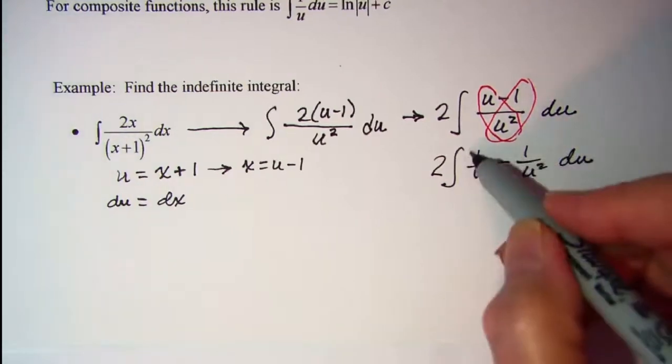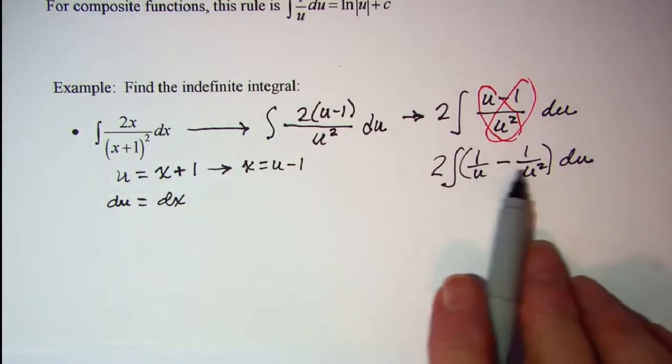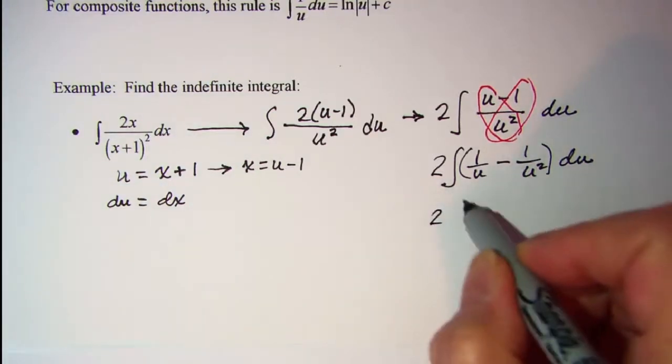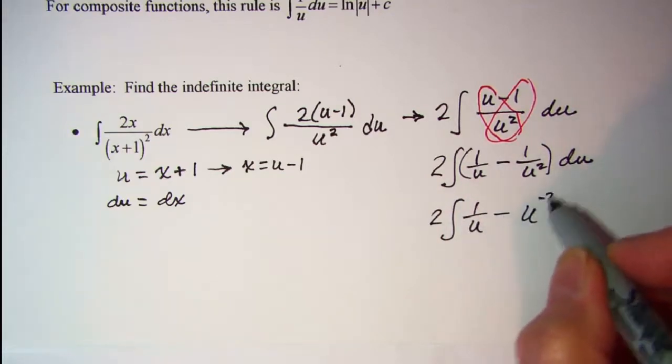All right, we need our log rule for this one. This one, however, we can use our power rule on. So I'm going to rewrite that. I have 1 over u minus u to the negative 2.